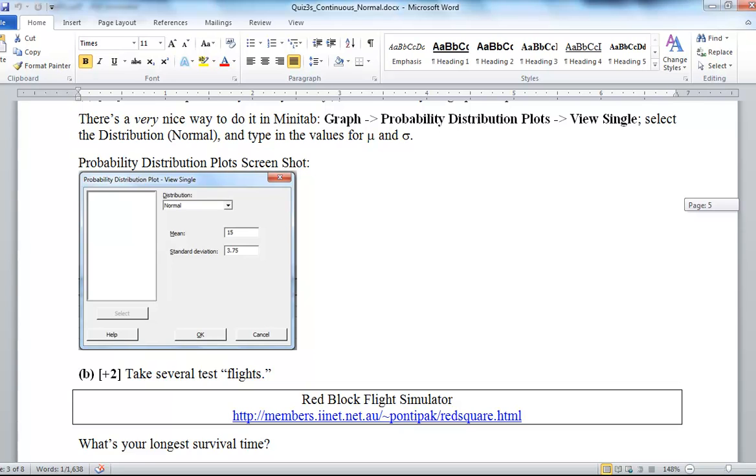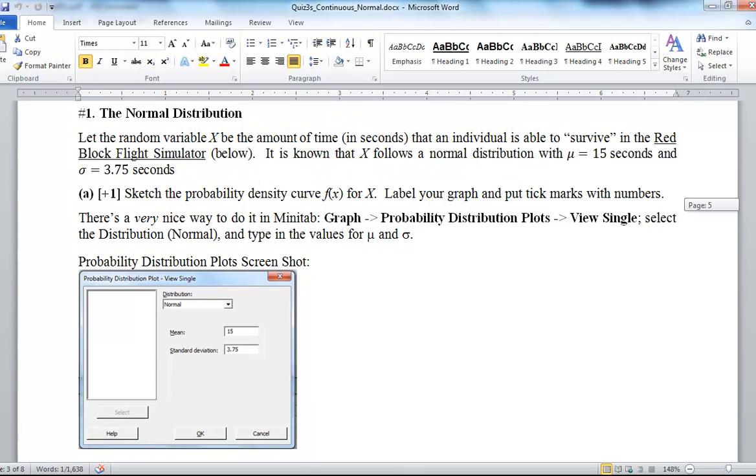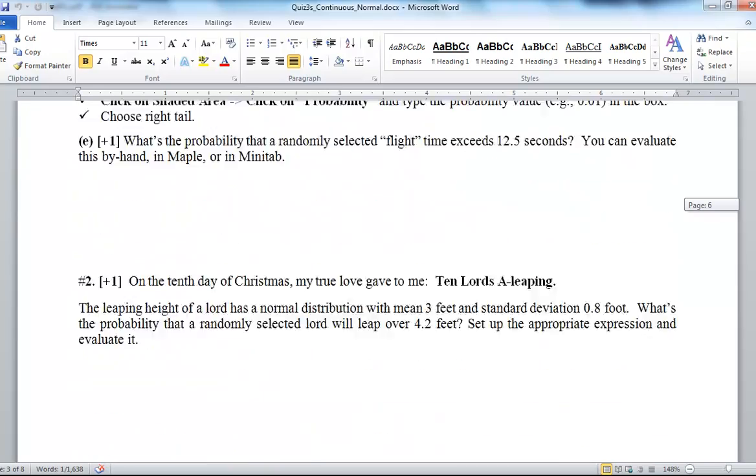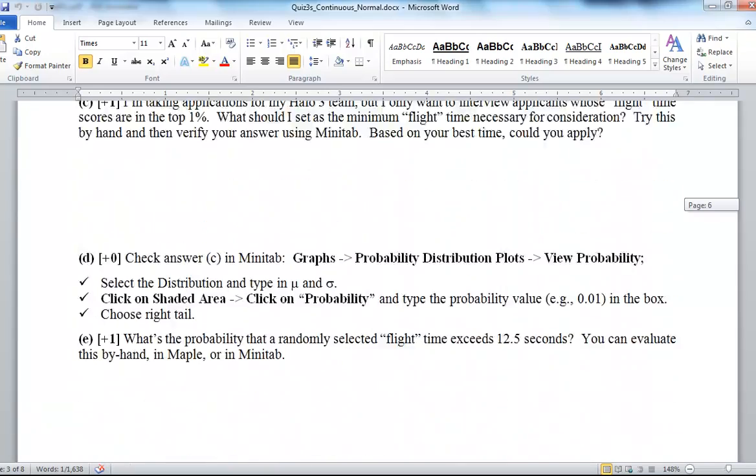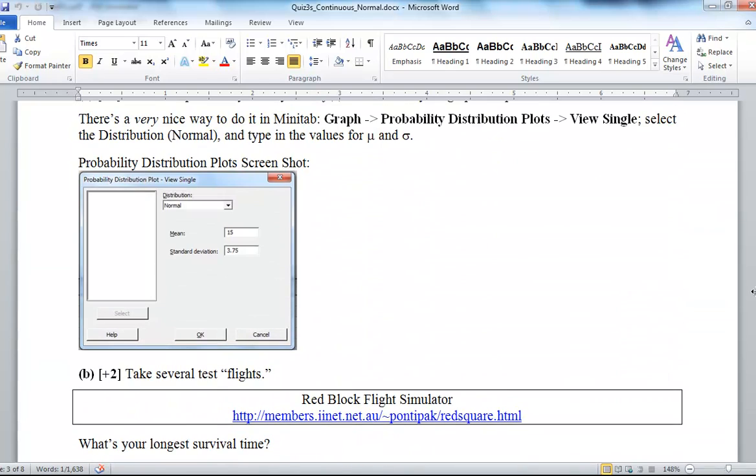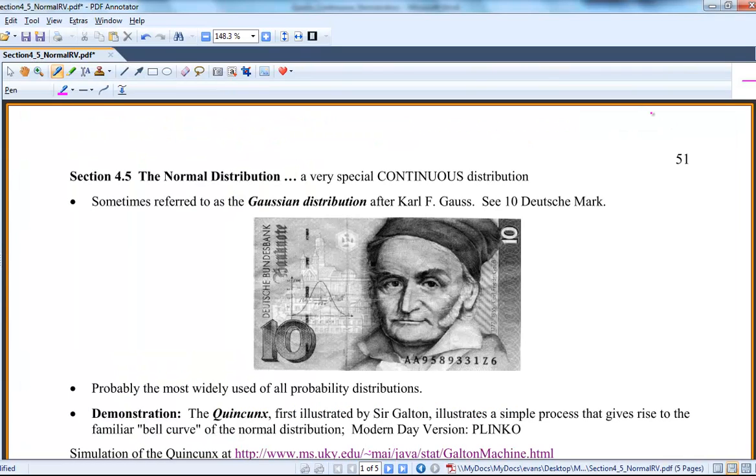And if you want extra practice, I made another one. I called it quiz 3b. It's totally optional. Most of these are normal random variable problems just to give you extra practice. And I also showed how you can compute these values in Minitab. So you can always integrate in Maple or use the table, but Minitab is also nice for finding some of these probabilities. So I went ahead and showed you how to do that on this quiz 3b, if you're interested. So enough of shuffling through this. Let me go to the lecture, so section 4.5.